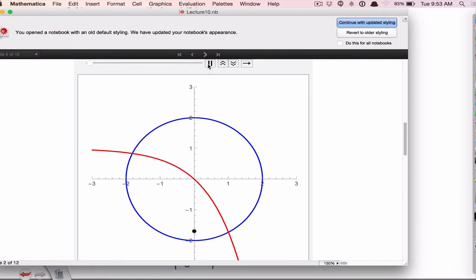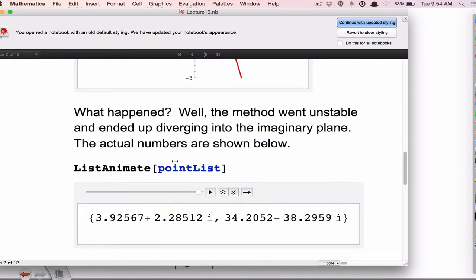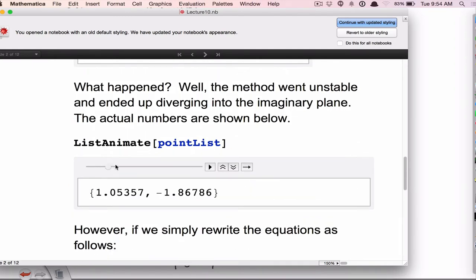So I started an initial guess, close, farther away, off the screen. So this method is not a good method. And if you look at the actual numbers, you can see, so those are the, this is the initial guess, and these are the computed solutions using that iteration scheme.